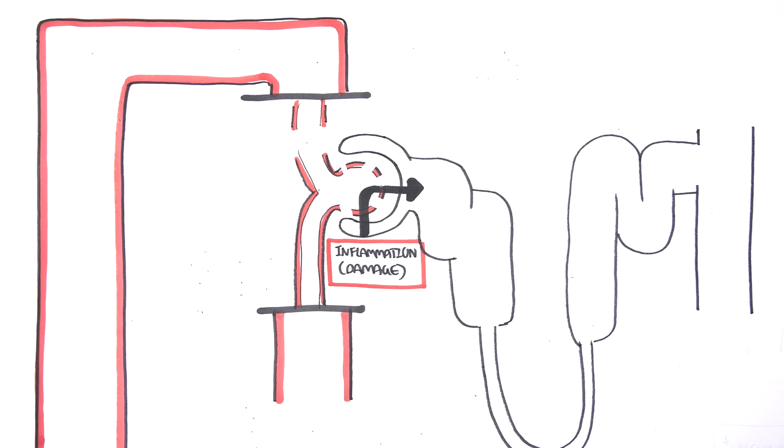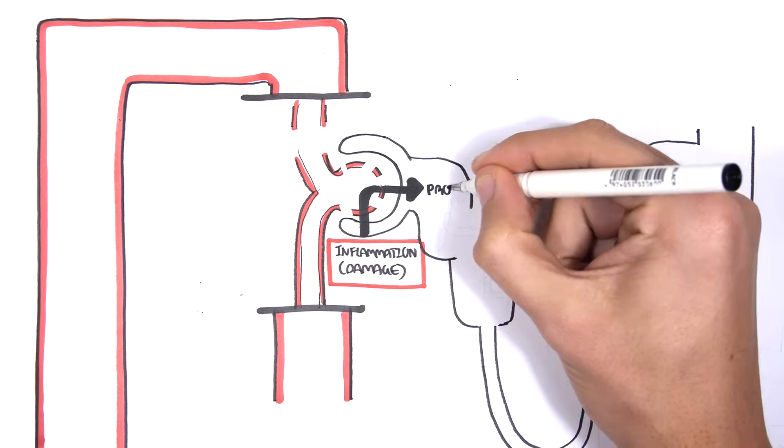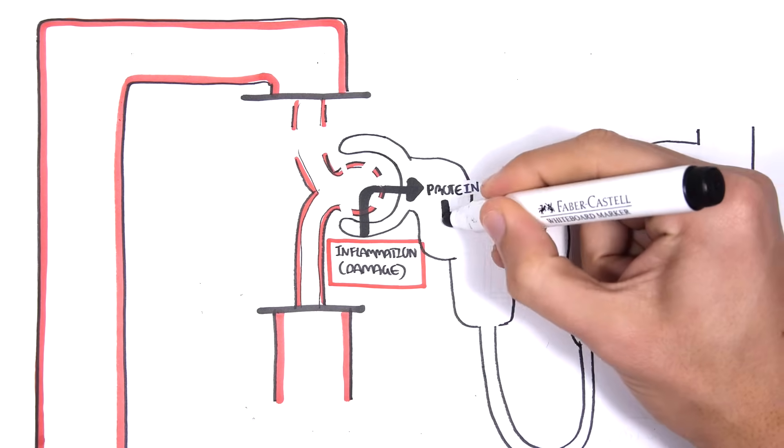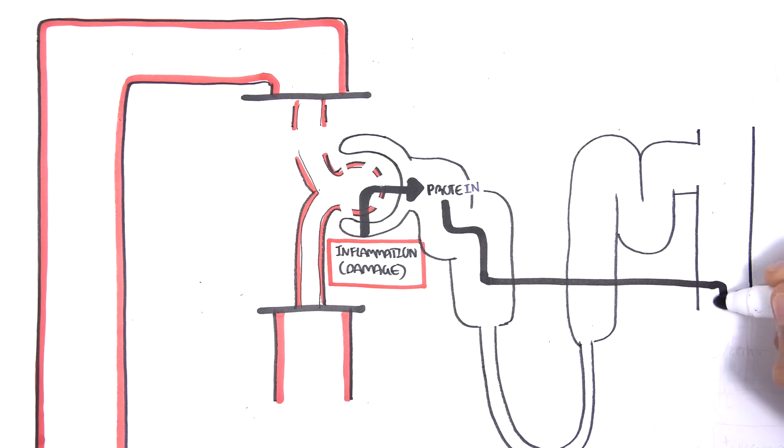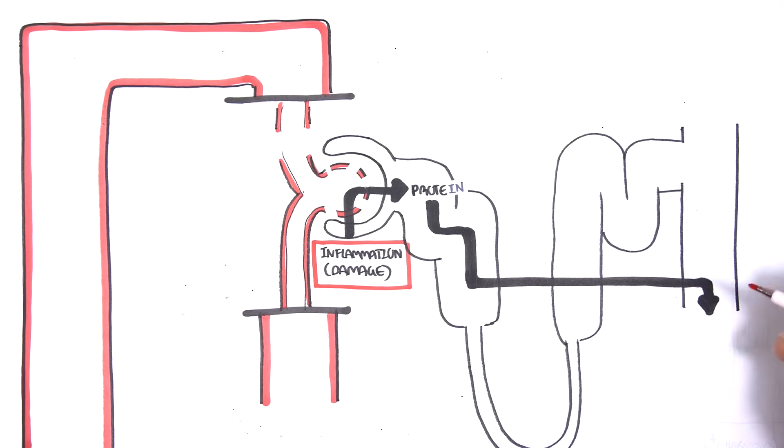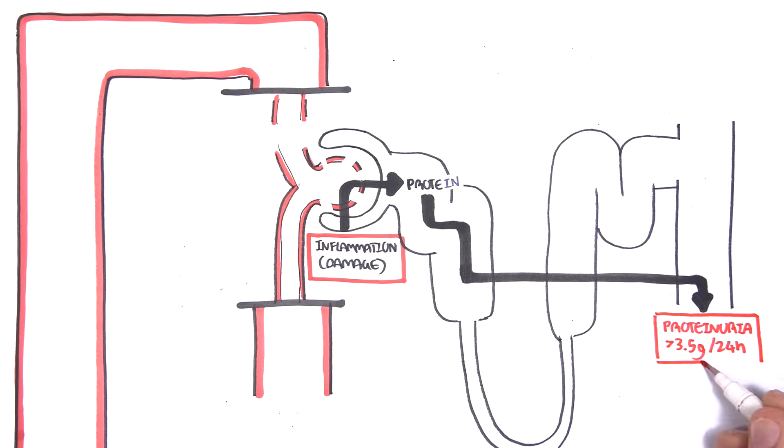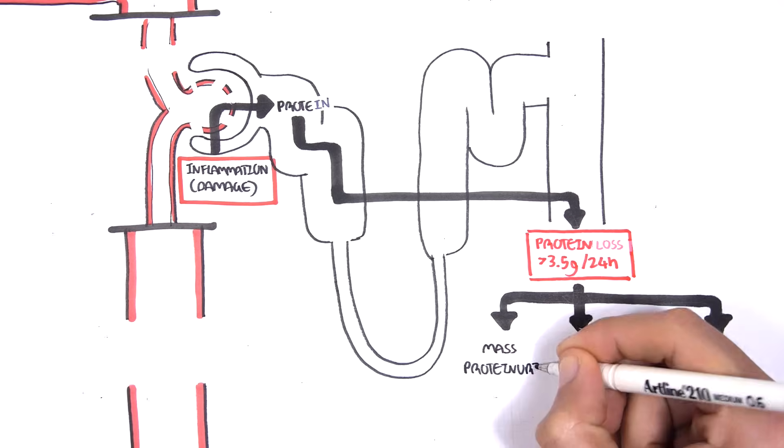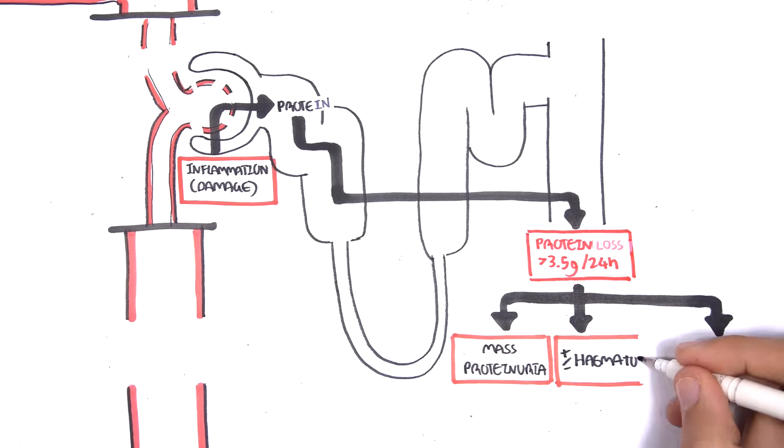Podocytes are damaged within the glomerulus, and this damage allows proteins to pass through into the nephron's tubule. This usually should not happen. The protein travels through the nephron's tubule and becomes part of urine. Nephrotic syndrome is characterized by protein loss of more than 3.5 grams in 24 hours. This results in massive proteinuria, with or without hematuria, which depends on how much damage occurs to the glomerulus.